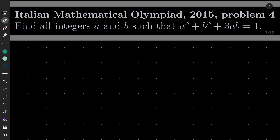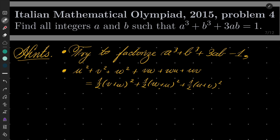My hints for this problem are the following. Try to factorize a cubed plus b cubed plus 3ab minus 1. It's a bit tricky, but pay attention in particular to a plus b minus 1 in some shape or form. You should also at some point use the identity that u squared plus v squared plus w squared plus vw plus wu plus uv can be expressed as a sum of three squares.